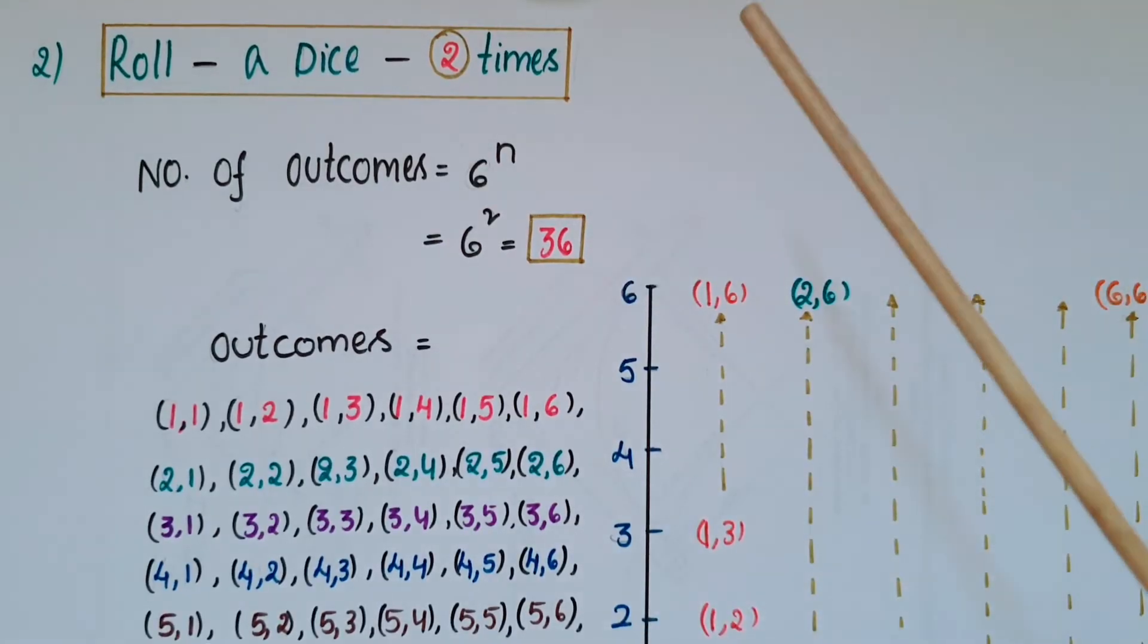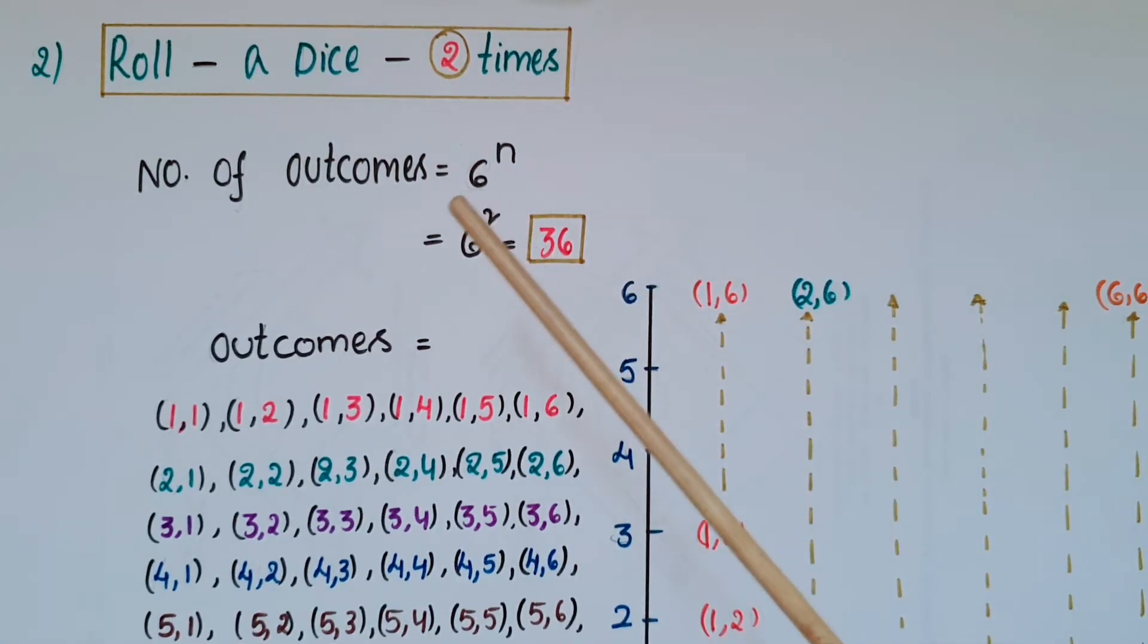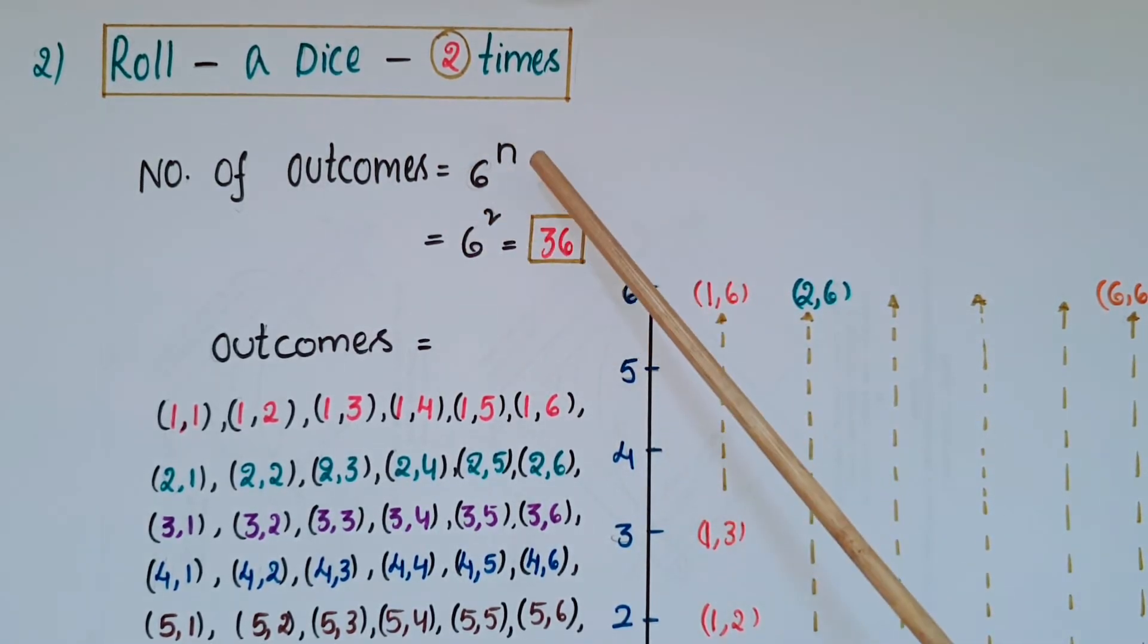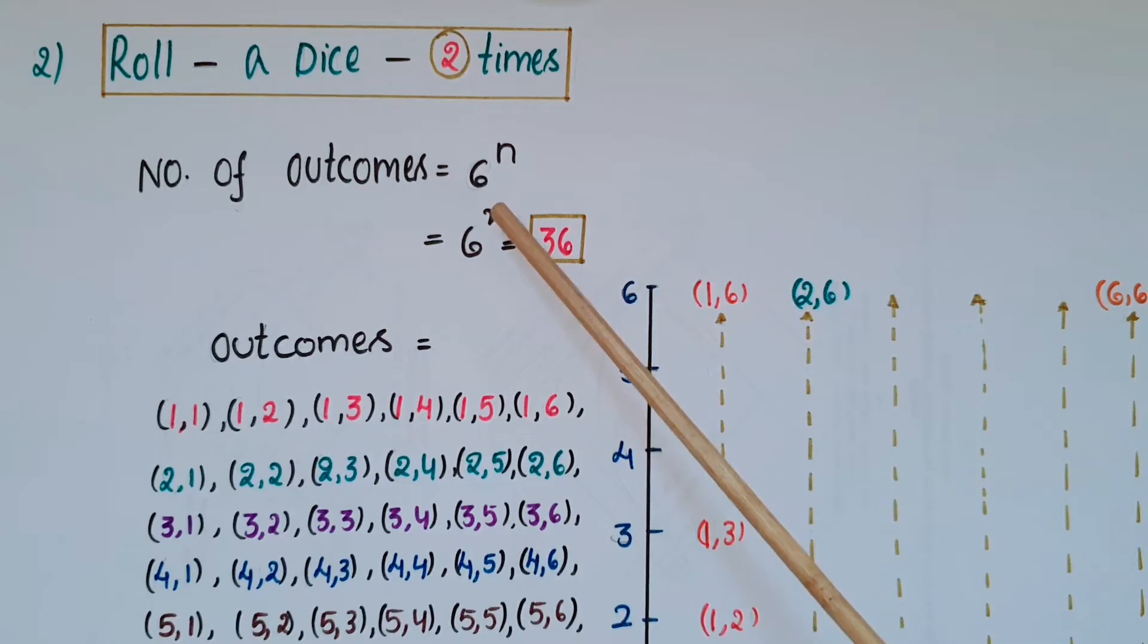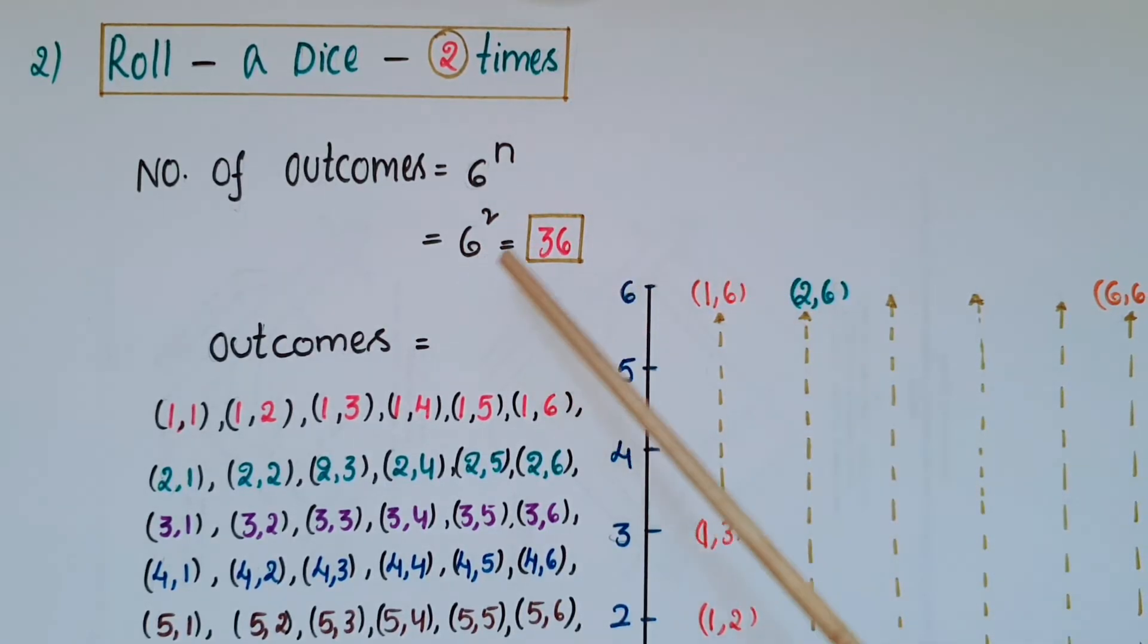This is second one, roll a dice two times. Number of outcomes if I roll a dice two times is 6 to the power of n, that is equal to 6 square because here n is 2 times. So that is 36. Now I am going to tell how to write these 36 outcomes.